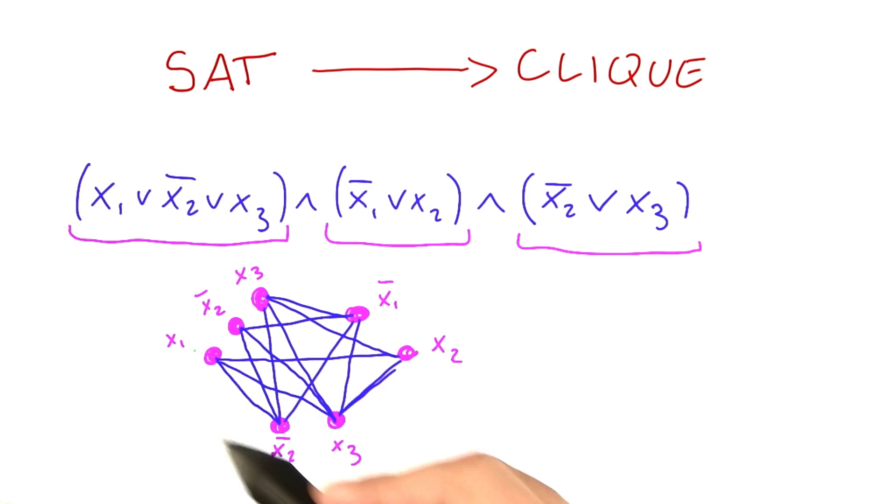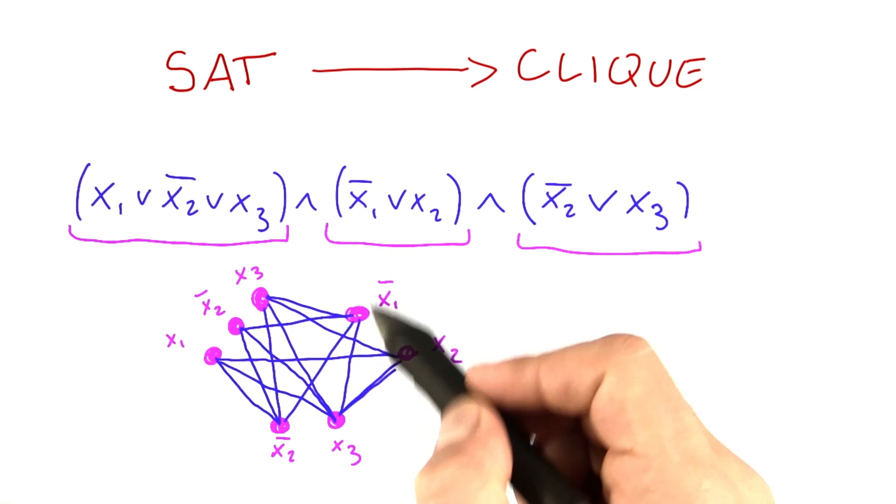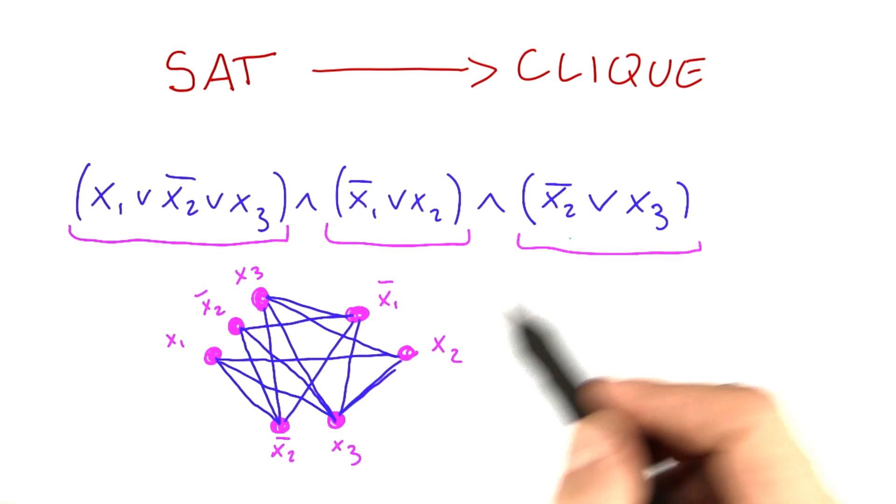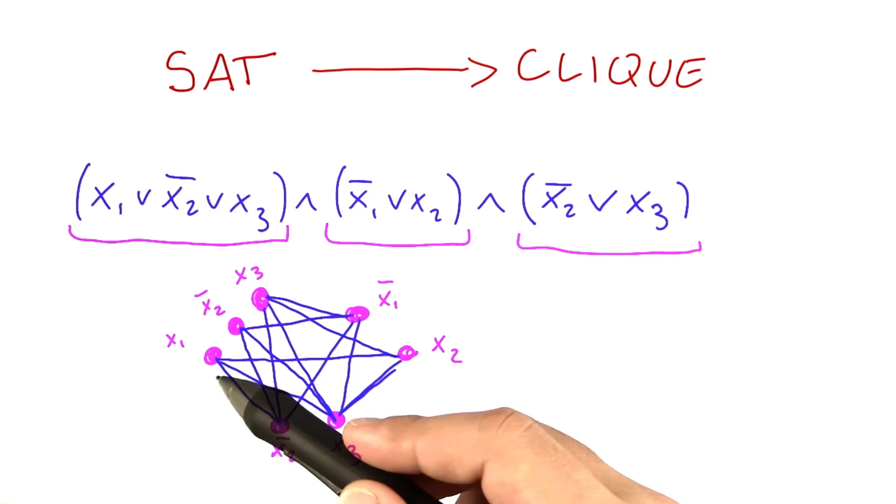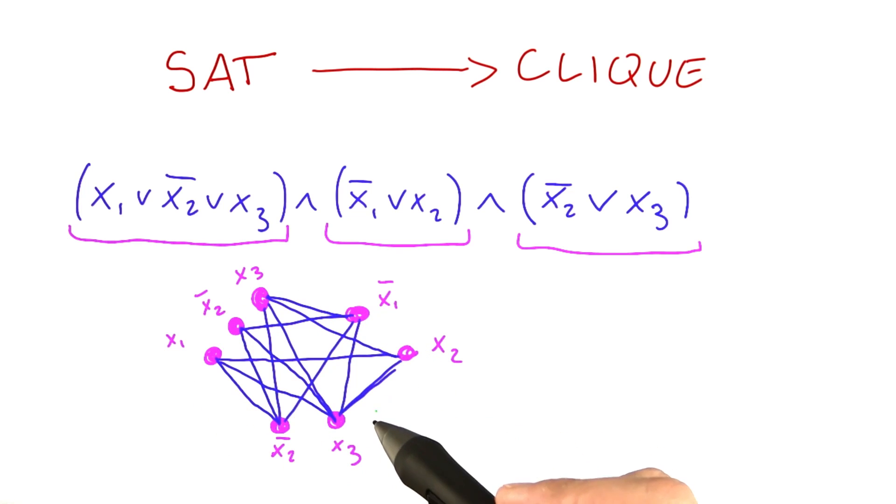then the network also will have polynomial size, because we have one vertex for each of the variables that occur here. So the size really doesn't change that much. We introduce edges, but you already know that the number of edges is quadratic in the number of vertices that we have. So the size stays polynomial, which is already good for our reduction.